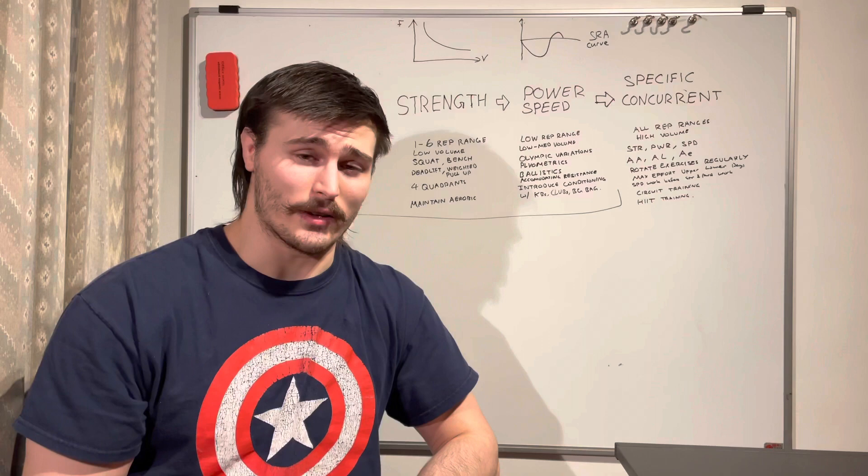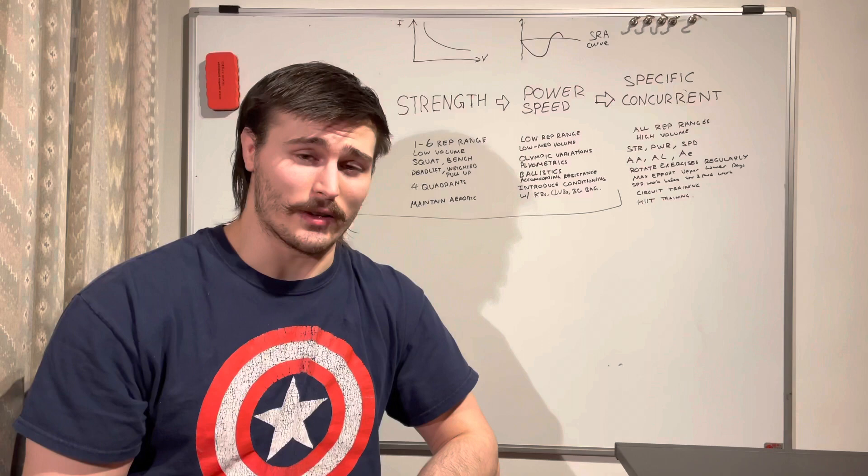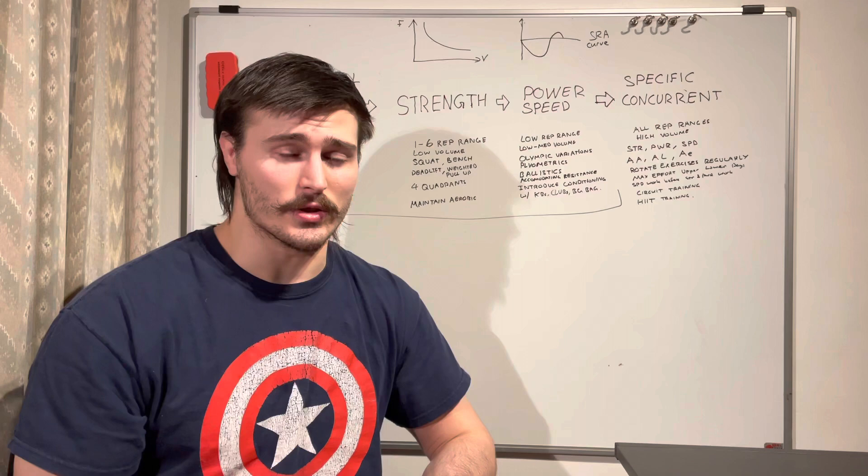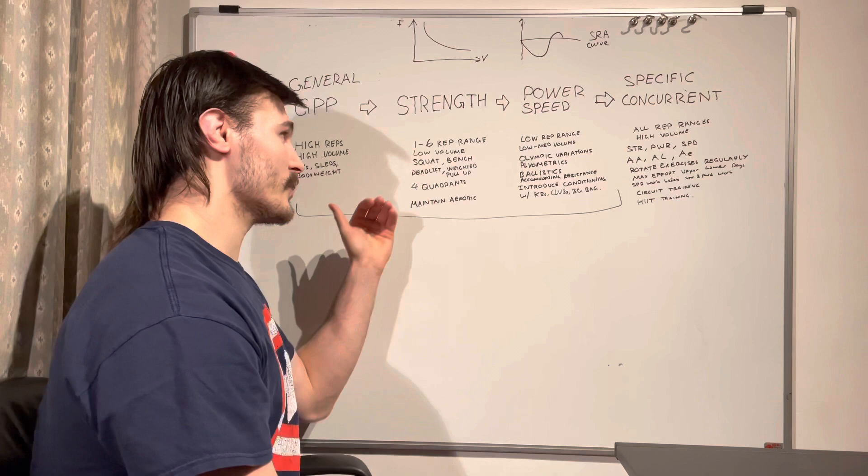Then we move into strength. This is where we go into a maximal strength phase, where we're trying to really improve the one rep max in the four quadrants of our body. We split the body into four: a hinge movement, a squat movement, a pulling movement, and a pressing movement.